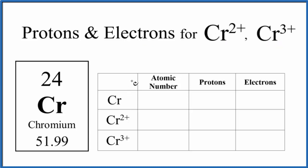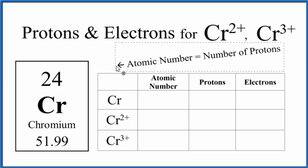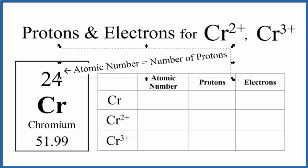When we look at the periodic table, we can see that the atomic number for chromium is 24. So for chromium here, 24. And that's the same for the ions. If it's chromium, it's going to be 24. If it has Cr in it, it's 24 as its atomic number.